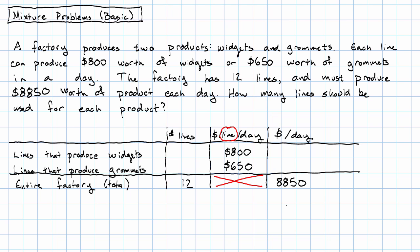How do we set up a problem like this? Well, making the table is our first step. Organizing the information that we're given in the problem in a way that lets us see what's going on. We want to know how many lines should be used for each product. We want to know the number of lines for widgets and the number of lines for grommets. We'll give variable names to those two things.